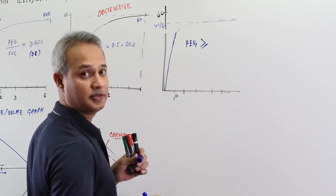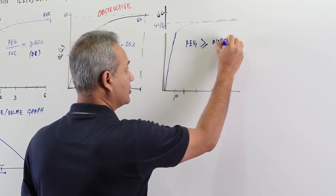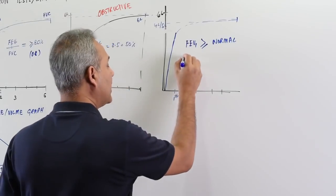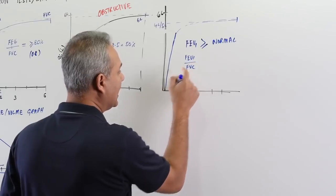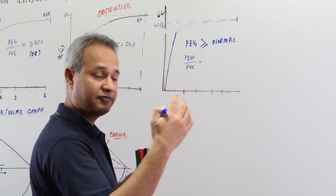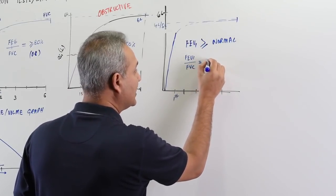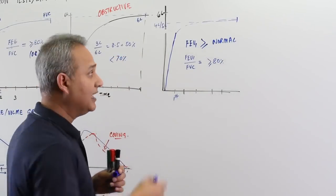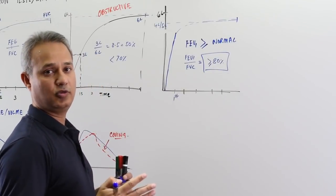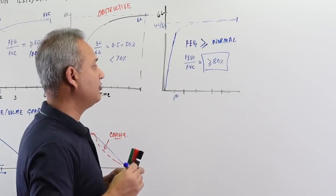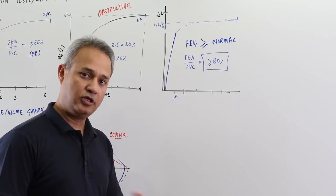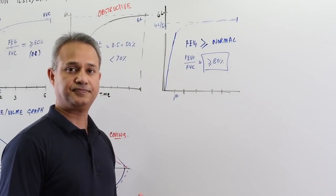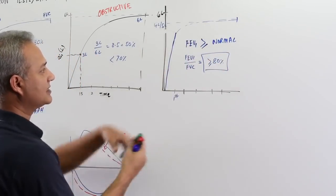So in restrictive disease: FEV1 is either increased or normal, and FVC is reduced — depending upon severity. If FVC is reduced more than FEV1, the ratio FEV1 over FVC will become greater than 80%. Compare this to obstructive disease where the ratio was less than 70%. In restrictive disease the ratio is equal to normal or greater than normal. If someone has an FEV1/FVC ratio that looks normal or elevated, you must still look at the FVC — if FVC is lower, the patient may have restrictive disease.